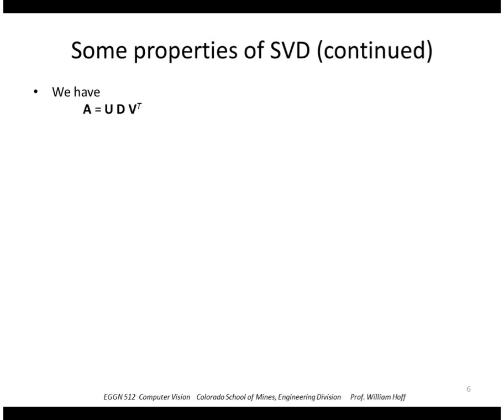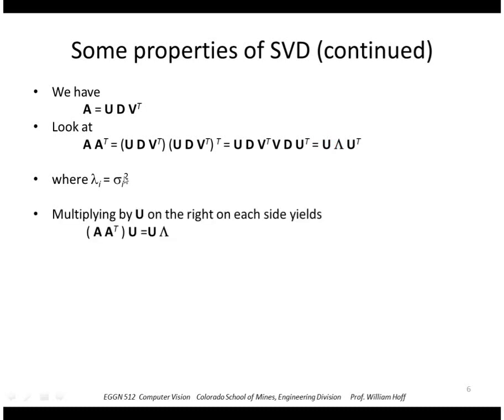All right, another property. Let's take our SVD and multiply A times A transpose. So substituting in what A transpose is we get this. Transpose of a product is just the product of the transposes, so this inner set here V transpose V just is identity, so we get U times some diagonal matrix Λ times U transpose, where the elements of this diagonal matrix Λ are just the squares of the sigmas.